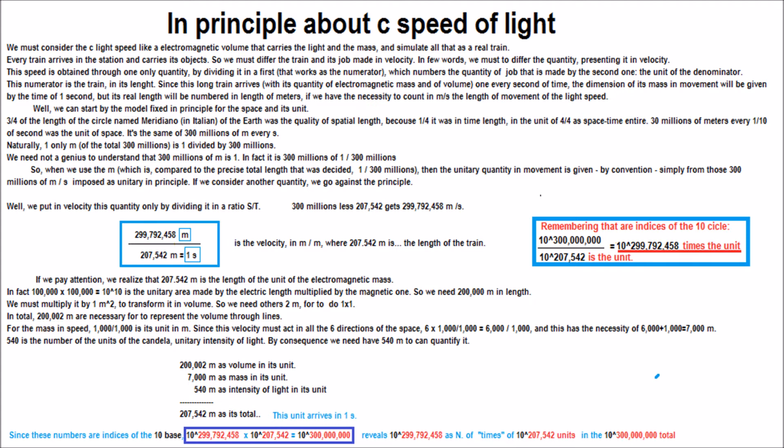So, when we use the m, which is compared to the precise total length that was decided, 1,300,000,000, then the unitary quantity in movement is given by convention.